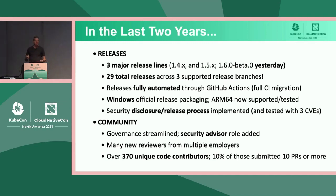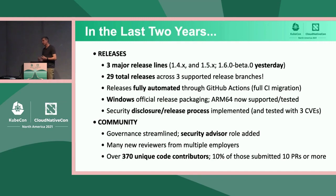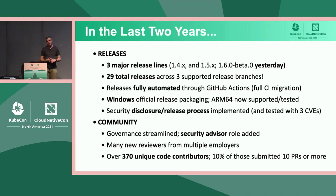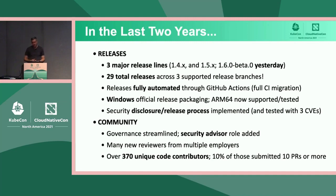One of our maintainers has added testing for ARM64. We haven't integrated it into our release process — those of you who use GitHub Actions know there's no built-in ARM64 runners, and we haven't been able to do self-hosted. But that's another architecture that's getting tested automatically and hopefully will be part of our release process soon.